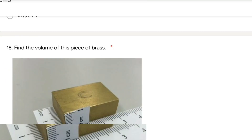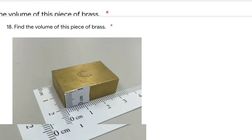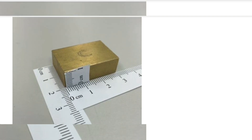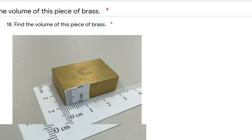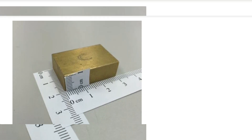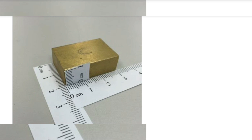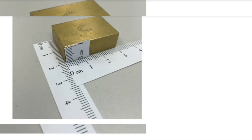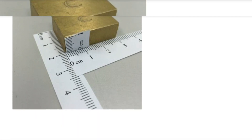In this question, find the volume of this piece of brass. Since we need to calculate volume and the dimensions of the piece are 3 × 2 × 1, we multiply to get the answer: 6 centimeter cubed.